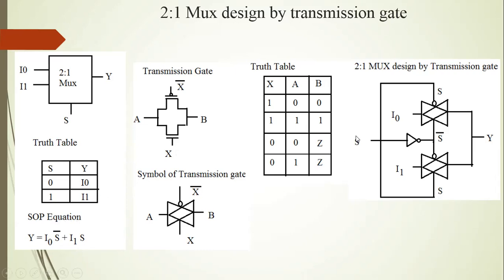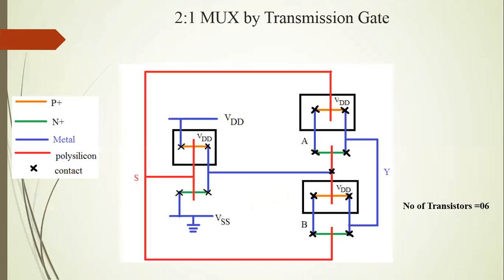The 2-to-1 MUX is designed by transmission gates. The i0 input is applied here and S-bar input is applied here. The i1 input is applied here and S input is applied here. When S is applied, the S-bar input is on the opposite side at the gate of the P-MOS transistor, and S-bar input is applied on the gate of the N-MOS transistor. This is the 2-to-1 MUX designed by transmission gates.